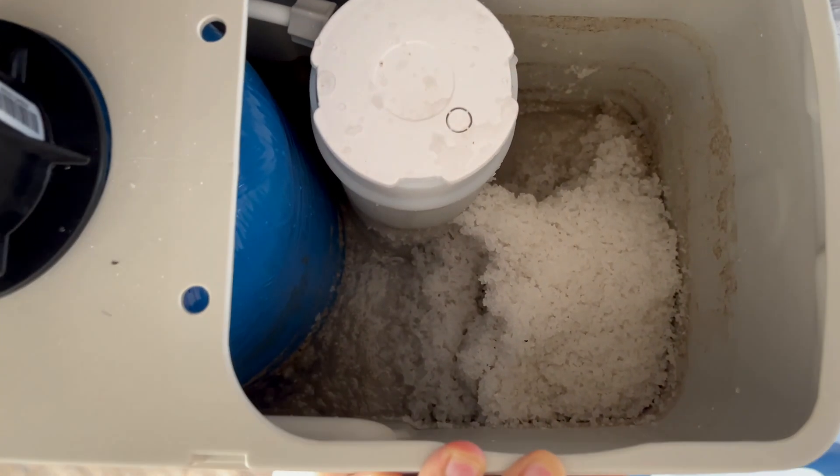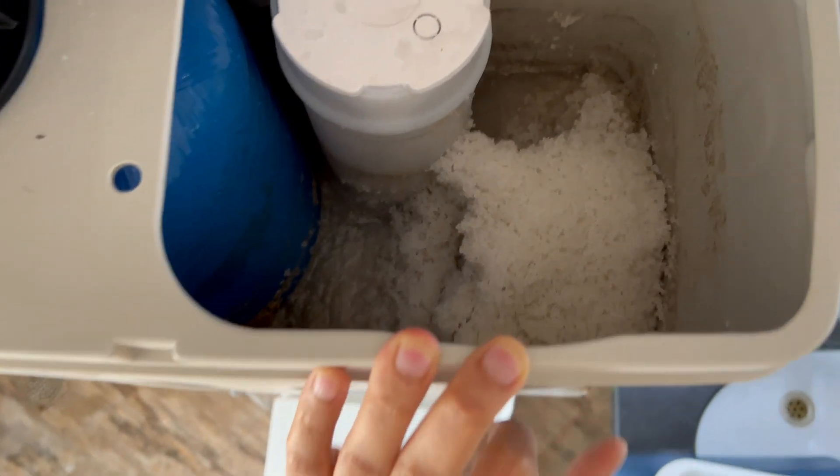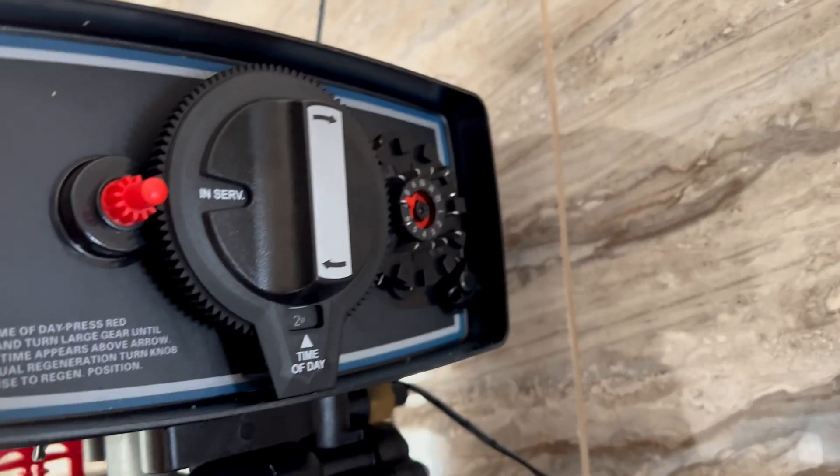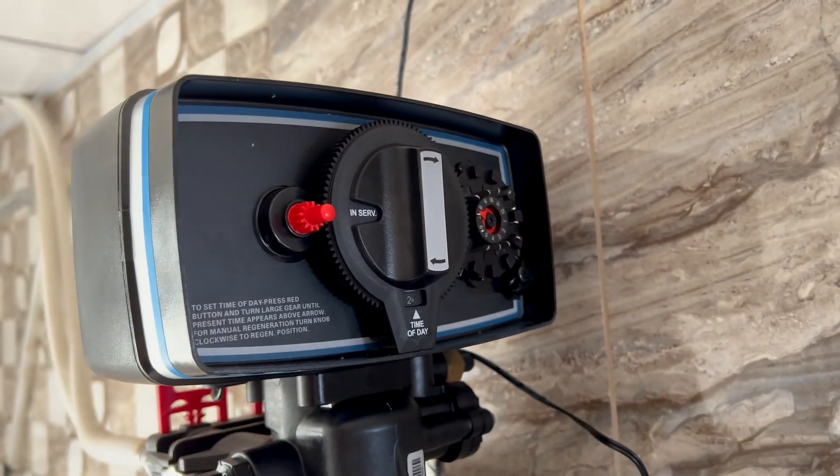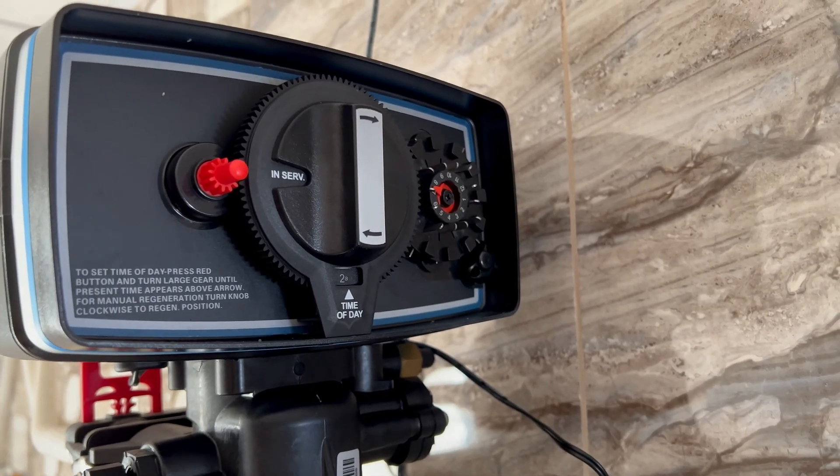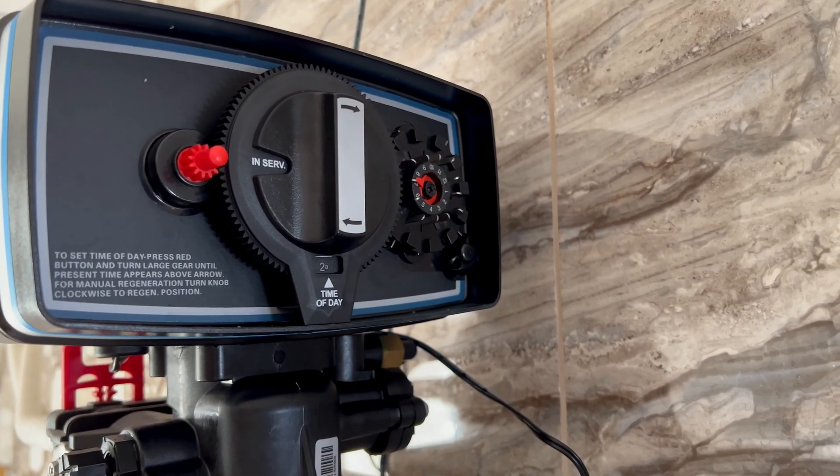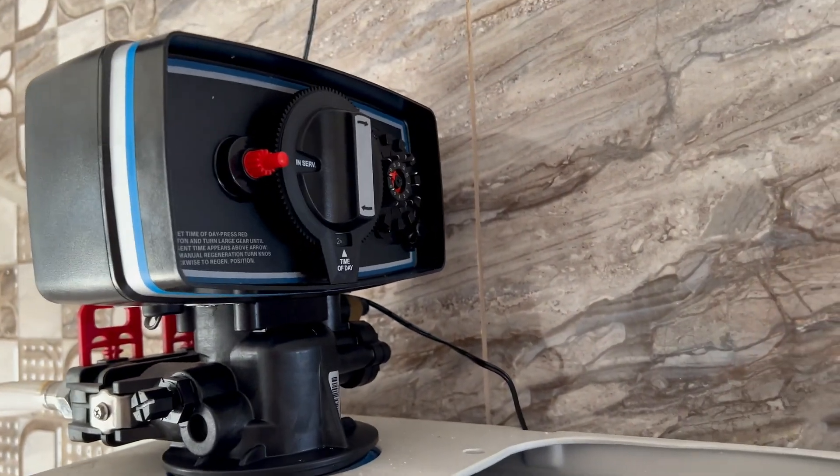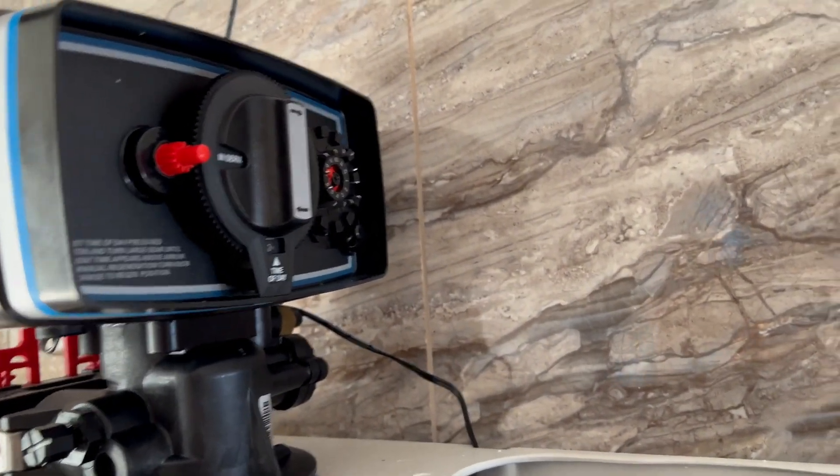The biggest disadvantage of this machine just like its manual variant is that it does not give you an indication when the water turns hard. It might be trial and error for you to understand the regeneration frequency that is required and a water testing kit at home will certainly help you make the decision on the frequency that is needed.